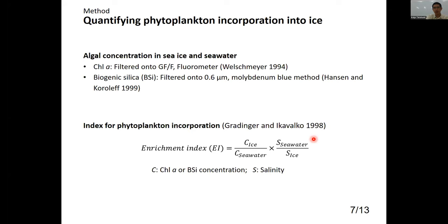The proportion of frazil ice is defined as the thickness of the frazil layer relative to total new ice thickness, measured only for new ice. To quantify phytoplankton incorporation, chlorophyll and biogenic silica concentrations were measured in both sea ice and seawater. An enrichment index was used: concentration in sea ice divided by that in seawater, further divided by the ratio of seawater salinity to sea ice salinity. If the index equals 1, concentration in new ice is identical to seawater; a higher index means more material was trapped.